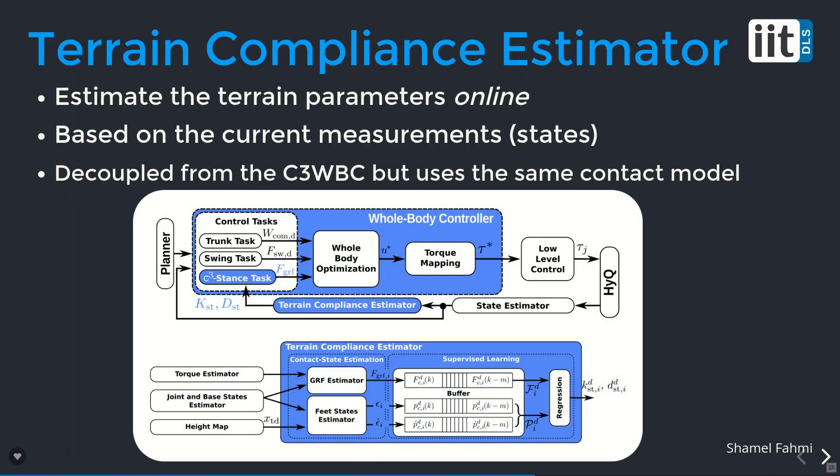From the whole body control formulation, it still needs the terrain impedance parameters, so we need to provide those online. This is the main objective of the terrain compliance estimator. We do that based on current measurements provided by the state estimator. It is important to mention that the terrain compliance estimator is completely decoupled from the whole body control, but uses the same contact model.